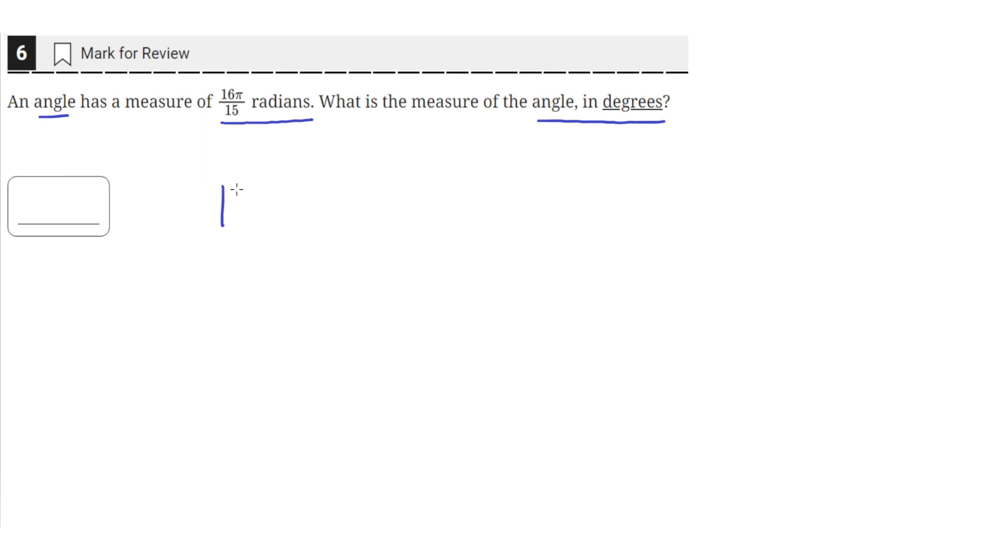so we have an angle that measures 16 pi by 15 in radians and we want to convert that to degrees. So we know that there are 180 degrees in one pi radian.